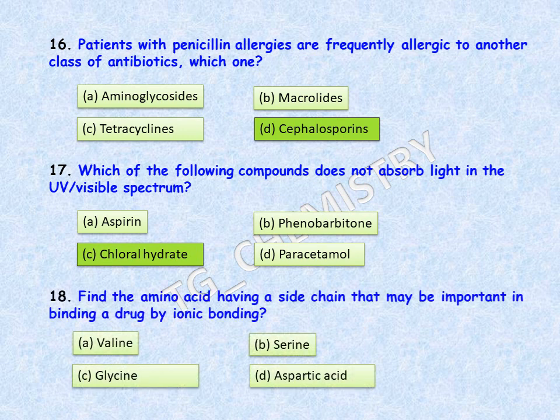Next question: find the amino acid having a side chain that may be important in binding a drug by ionic bonding. All four options are amino acids: A, valine; B, serine; C, glycine; D, aspartic acid. Among these four, aspartic acid is the correct answer, as it can bind a drug by ionic bonding.